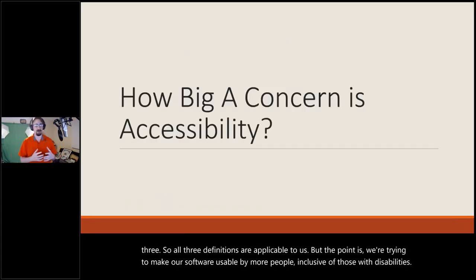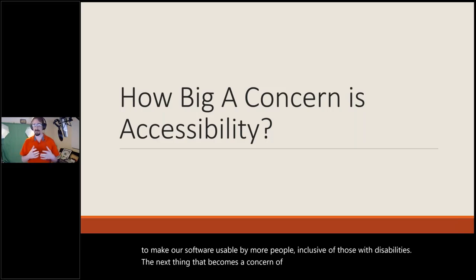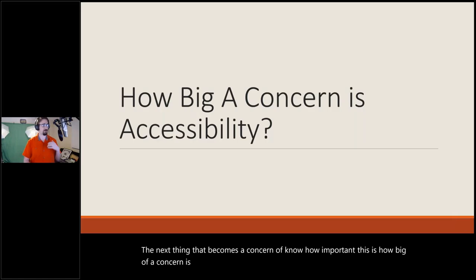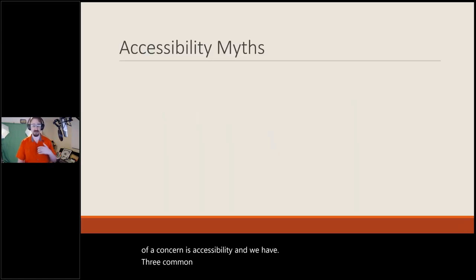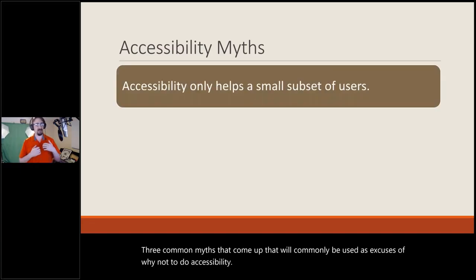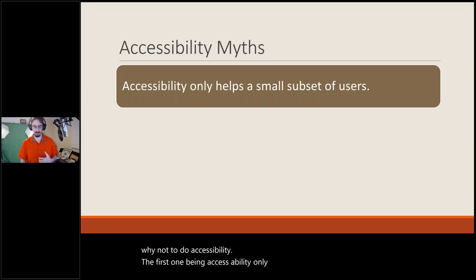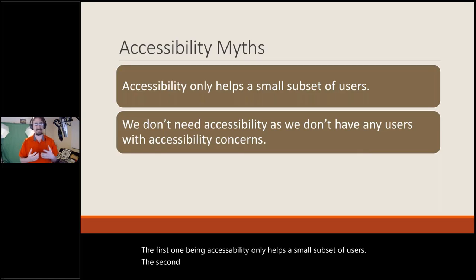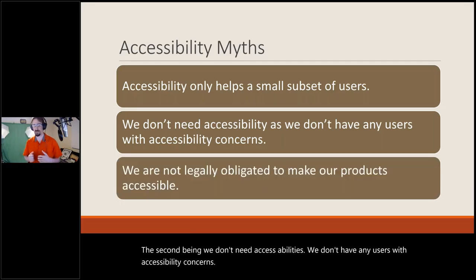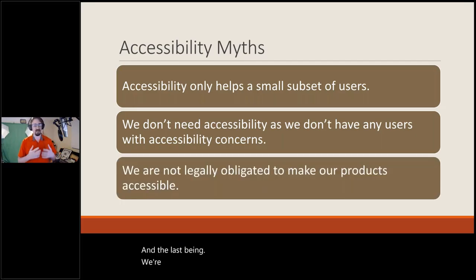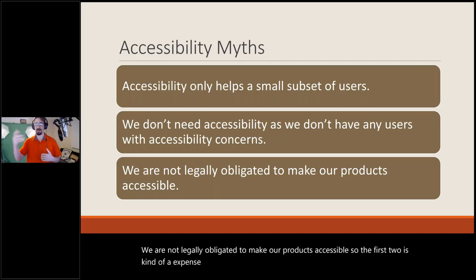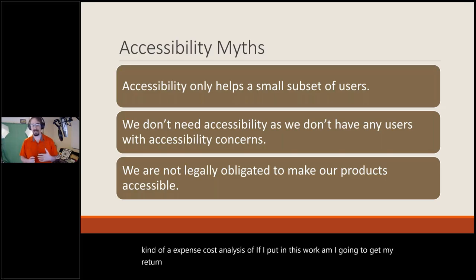The next concern is how important accessibility is and how big of an issue it really is. There are three common myths used as excuses for why not to do accessibility: first, accessibility only helps a small subset of users; second, we don't need accessibility as we don't have any users with accessibility concerns; and third, we are not legally obligated to make our products accessible. The first two are cost-benefit analysis arguments, and the last is strictly 'if I don't have to, I'm not going to.' These are all myths.